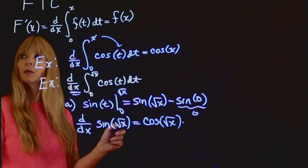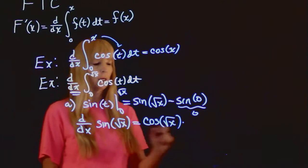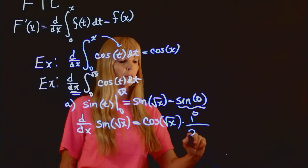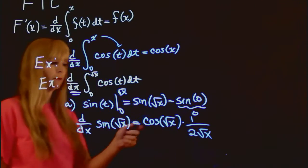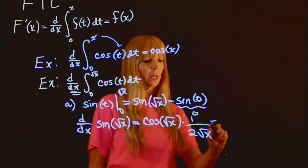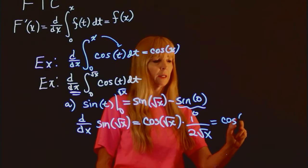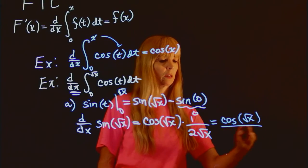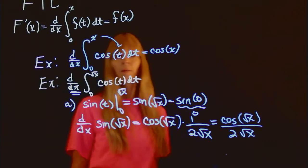The chain rule says now take the derivative of the inside, which if you remember that nice little shortcut, the derivative of square root of x is 1 over 2 square root of x. And thus we get our final answer, just put this on top of each other.